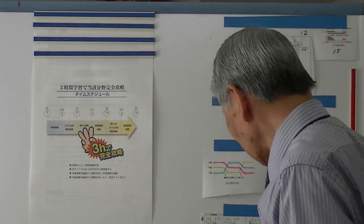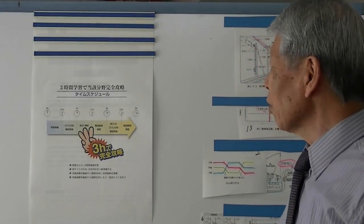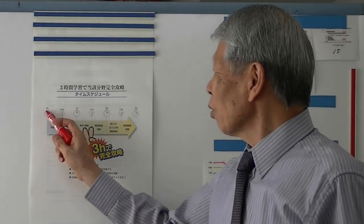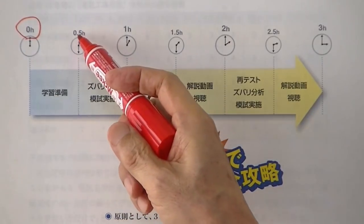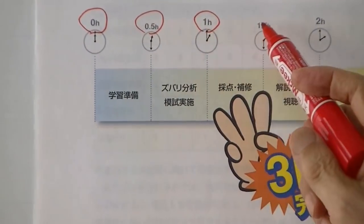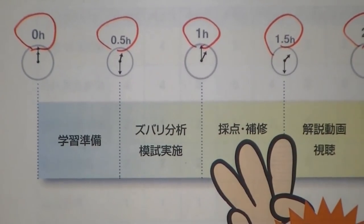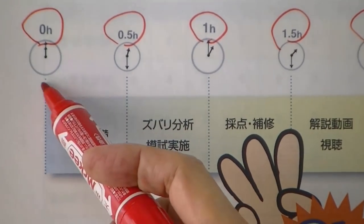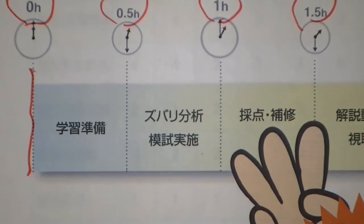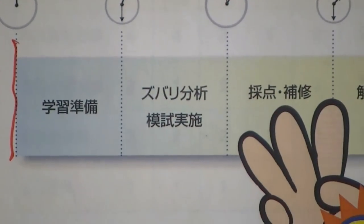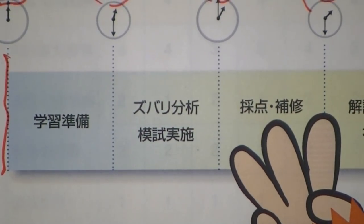完全攻略3時間。この3時間の中身を紹介しておきましょう。3時間とは言うんですけども、どう使うかというと、ゼロから始まって30分、1時間、1時間半、2時間、2時間半、3時間とこうなんですけども、一番最初にどっちにしても、まず自分の学習しようとする不得意の箇所の学習の準備をします。